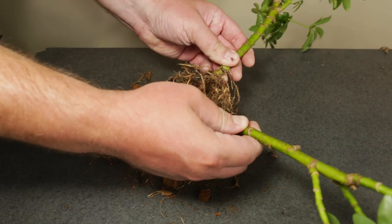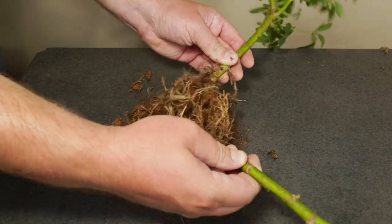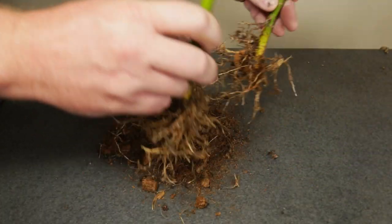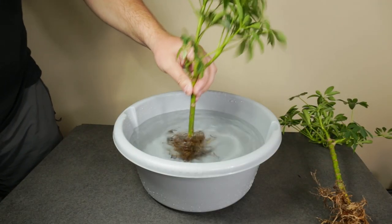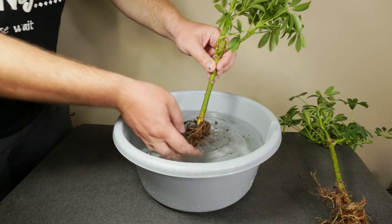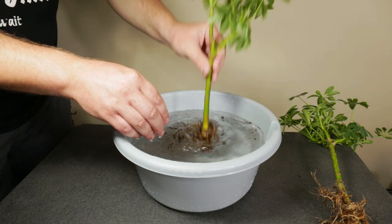After a few more minutes I was able to clean up the remaining material and finally separate the two plants. Then I washed off all the remaining debris from the roots of the two Scheffleras to prepare them for root pruning and potting.